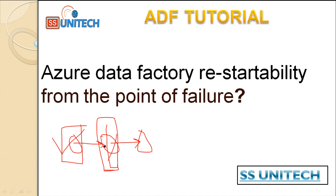This is very important because if your pipeline has 100 activities and 95 execute successfully but you get an error on activity 96, it's not good to execute everything again. We just want to start the execution at activity 96 so it will execute the remaining activities. We will see how to do that in Azure Data Factory in this video.